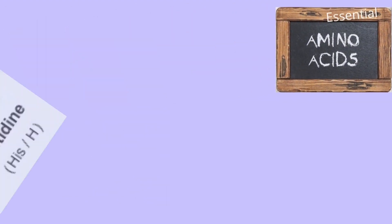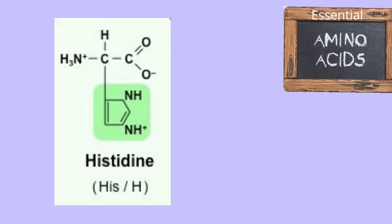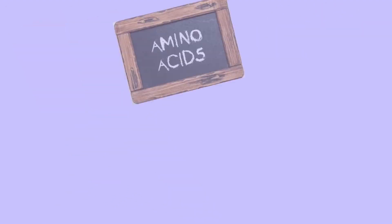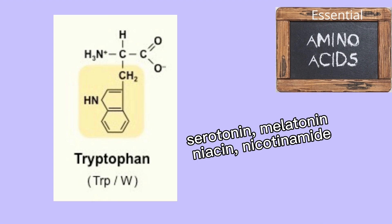Histidine is used to make histamine. Tryptophan plays a role in the production of serotonin, melatonin, niacin, and nicotinamide.